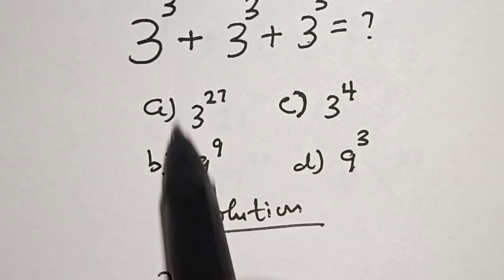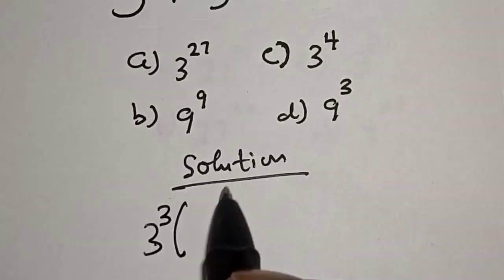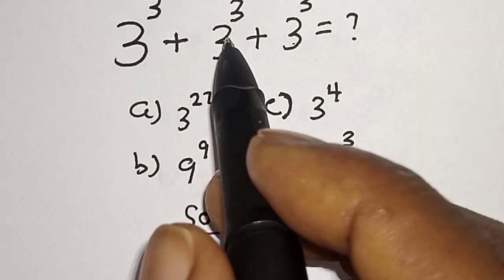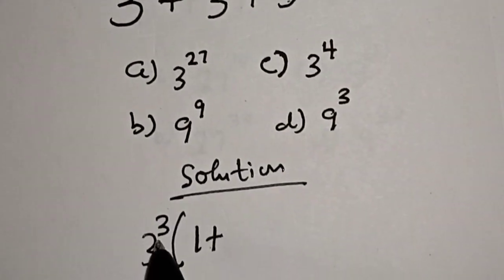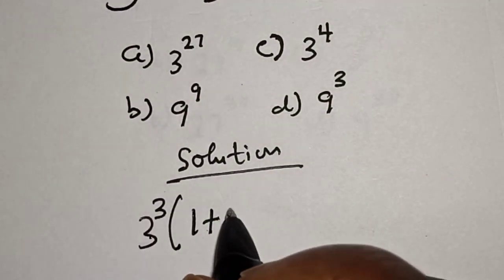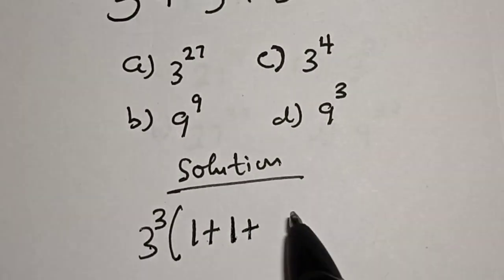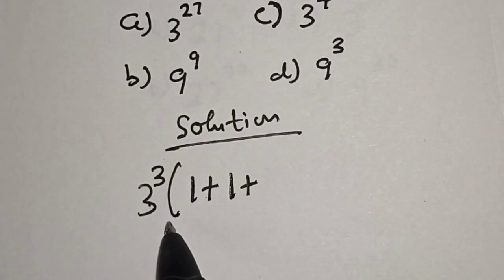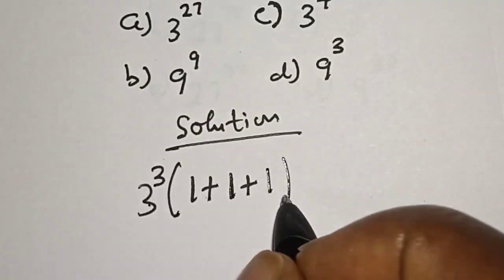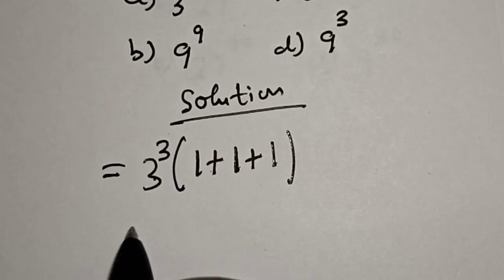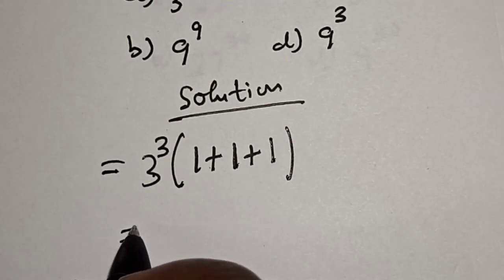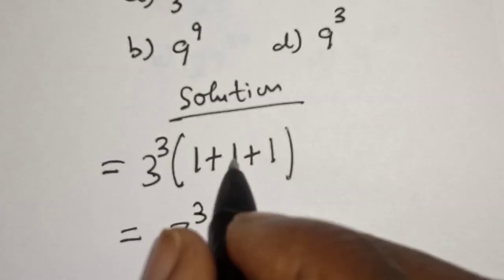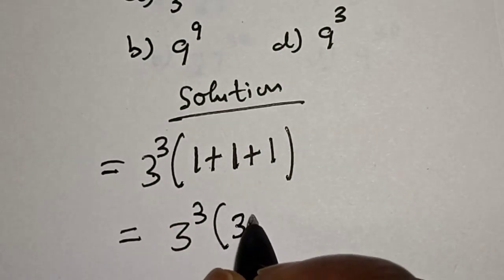Inside the bracket, each term divided by 3 raised to power 3 gives us one plus one plus one, which equals 3 raised to power 1. So we have 3 to the power of 3 times bracket (1 + 1 + 1), that is 3 raised to power 1.